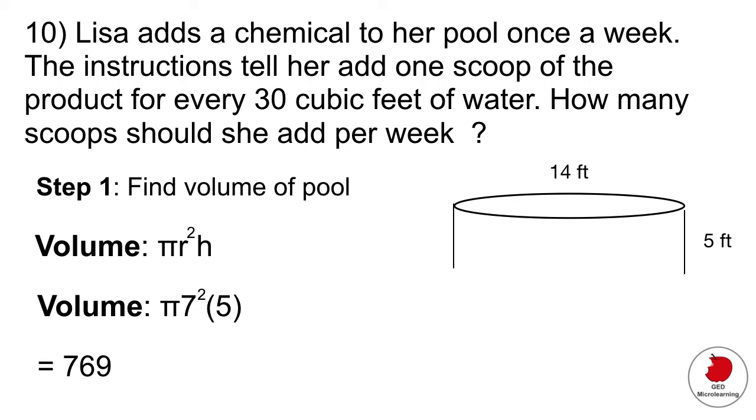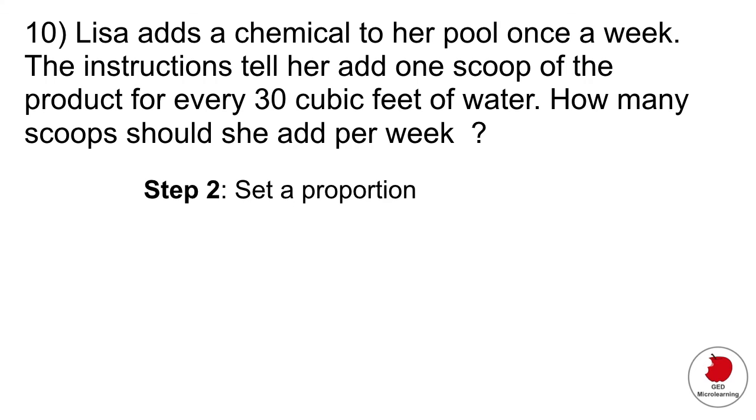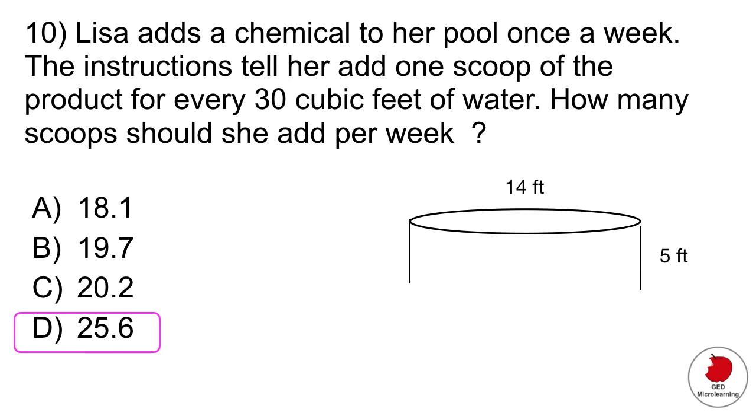The second thing that you want to do is now that you know the volume of the pool is to set up a proportion. So they've told us that one scoop of product is used for every 30 cubic feet of water. And we know that's the volume of her pool, 769. And they're asking us for how many scoops would you use for that amount of water. So you would set up your proportion like this. And then remember that you have to multiply diagonally as such. That gives you 30x is equal to 769. Divide both sides by 30. And that gives you 25.6 scoops, which is answer D.